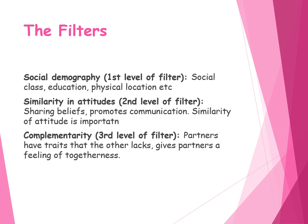The first level is social demography. That's the idea that social class, education, and physical location are going to be a really important factor in determining who we are most likely to meet in the first place. We're more likely to end up in a relationship with someone from a similar social demography to our own — same social class, same level of education, same ethnicity — because they're the people we are most likely to encounter and therefore have the opportunity to form a relationship with.